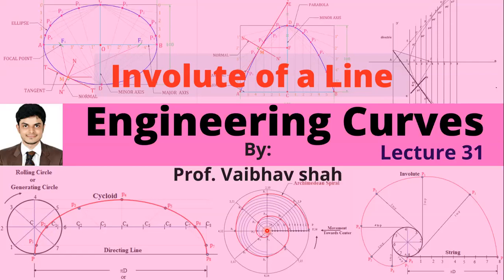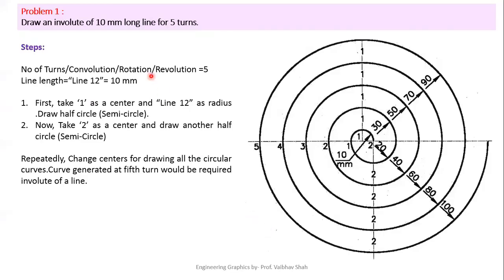Now let us start with one of the problems based on involute of a line. Problem 1: Draw an involute of a 10 mm long line for 5 turns. So here we have given one line and we have to draw the involute of this line. The line length is 10 mm and we have to draw the involute for 5 turns.